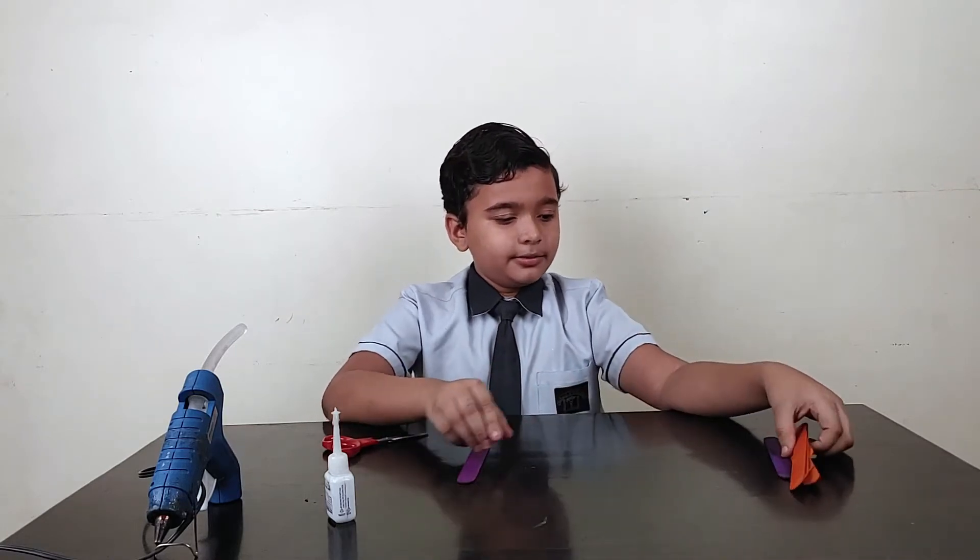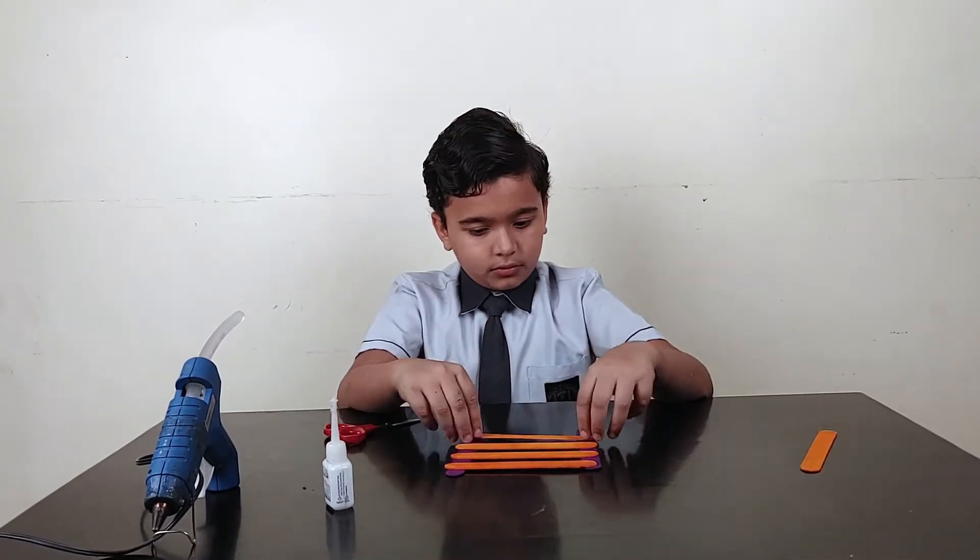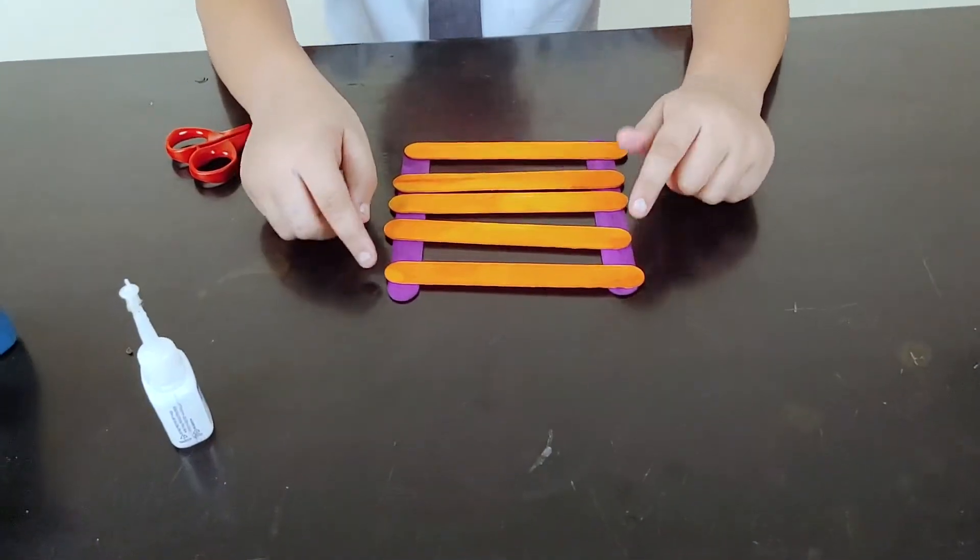So first we will make the base of Newton's Cradle. Take 7 ice cream sticks and put them like this, and stick them together.